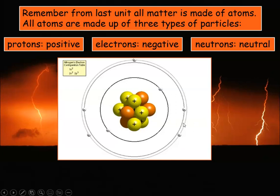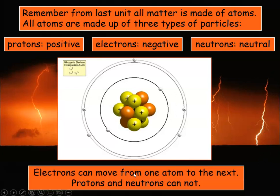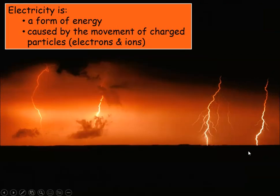A lot of an atom is empty space, and what we're going to find with this whole idea of static electricity is that these electrons are being freed from the individual atoms. As those electrons are freed, we can charge some things negatively, and the things they've been freed from become positively charged. Electrons can move from one atom to the next; protons and neutrons cannot.